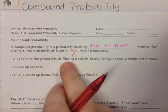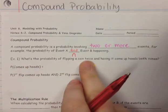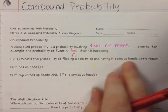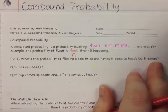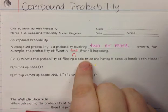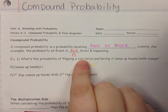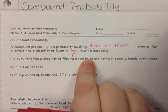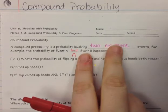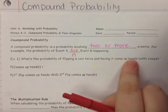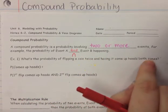So what's the probability of flipping a coin twice and having it come up heads both times? We actually have two events — we're going to flip a coin and then flip a coin again. That's two events happening, and we're going to have it come up heads both times.